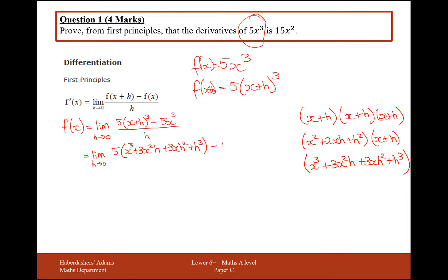Take away 5x³, all over h. Let's now expand the bracket with that 5 and then in the next line we can think about simplifying something. So 5x³+15x²h+15xh²+5h³ minus 5x³, all over h.